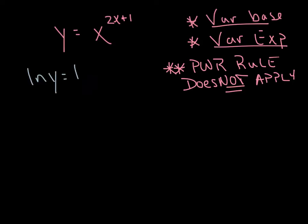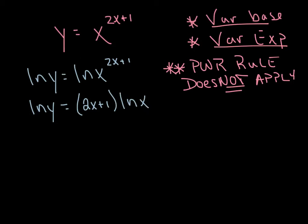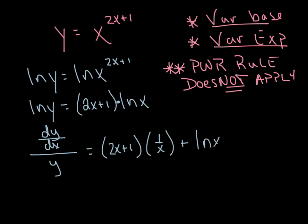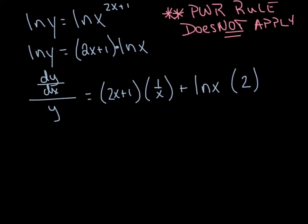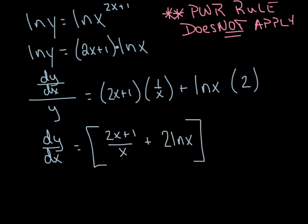The only reason I would do this is to take advantage of log properties — the exponent can come down, and I still haven't done any calculus yet. Now I'm ready to take the derivative. I've got dy/y equals, and now I do have a product rule unfortunately. So it's first times the derivative of the second plus the second times the derivative of the first. Then I multiply y to the other side: dy/dx equals (2x plus 1) over x plus 2 times the natural log of x, then multiplied by y. Substituting the original function back in for y — ladies and gentlemen, boom, we're done. That's our derivative.